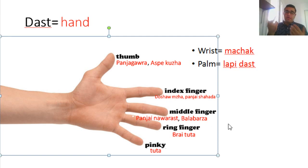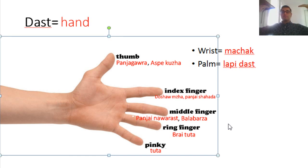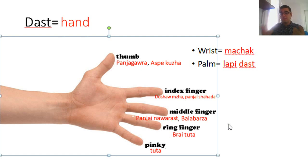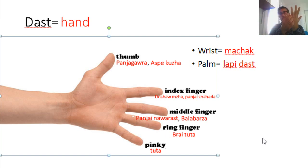Middle finger in Kurdish — the traditional way of saying it is bala barza. Bala means height and barza means high, so it literally means the tall finger. You also have panzih nawarast, which is the direct translation of the English term middle finger. Ring finger is braj tuta — it means the brother of tuta — and the pinky is tuta. So tuta and braj tuta.